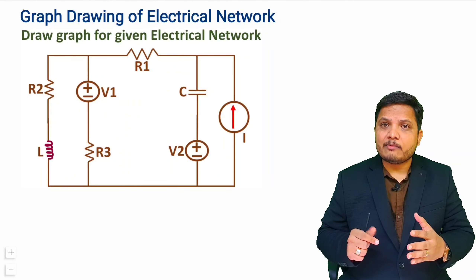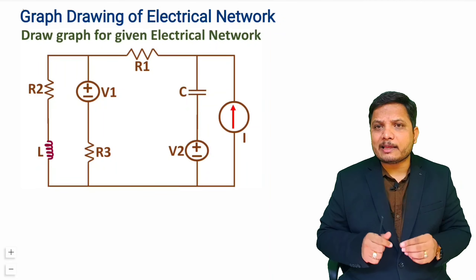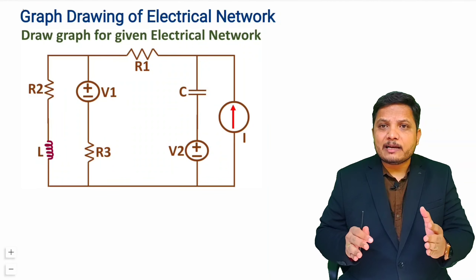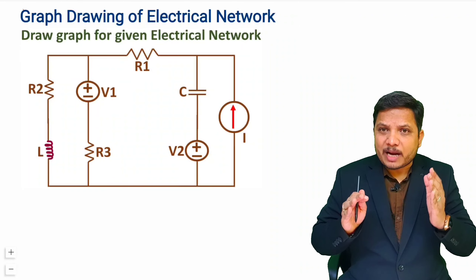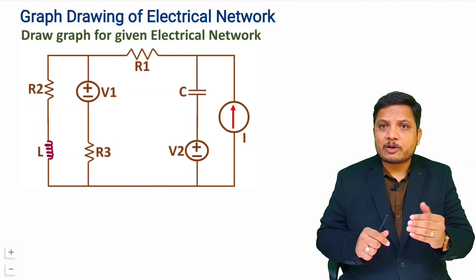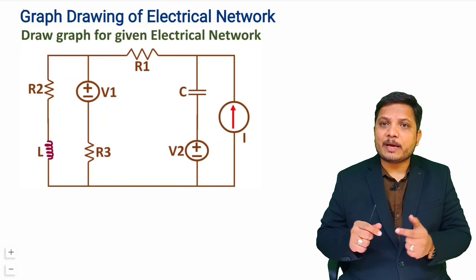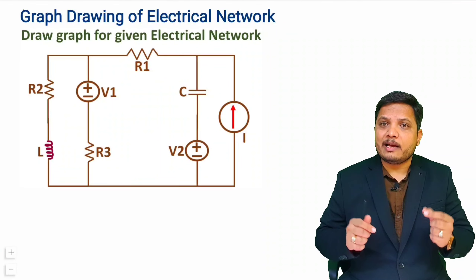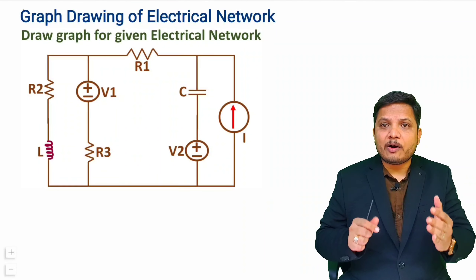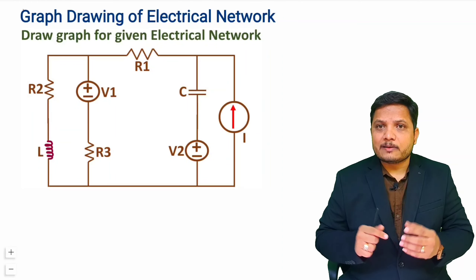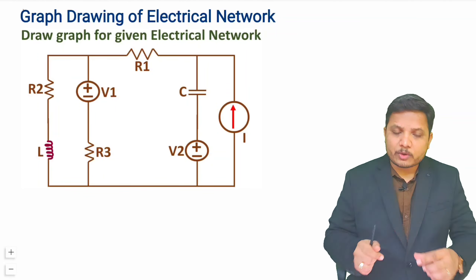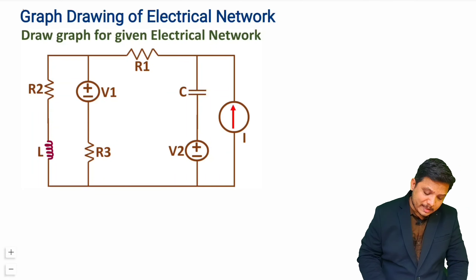After that, whatever elements are there in the electrical network, those can be considered as branches. Those branches can be connected as per the nodes which are formed in the circuit. To understand this, I will be explaining two examples.